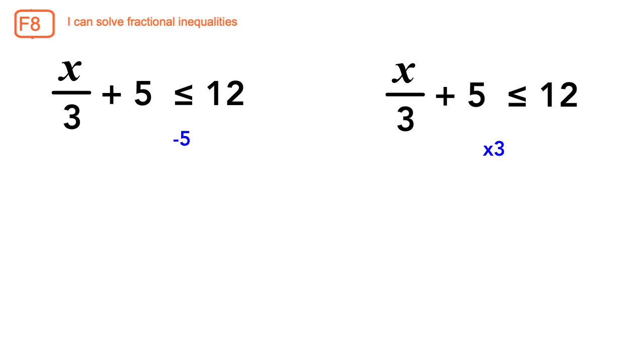Let's start with subtracting 5 first. We are left with x over 3 which is less than or equal to 7. Then multiply by 3. We are left with x is less than or equal to 21.